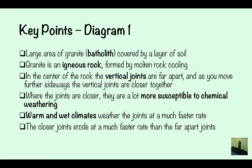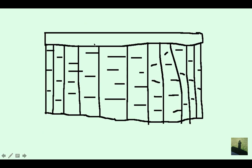In the center of the rock, the vertical joints are far apart. And as you move further sideways, the vertical joints are closer together. So these bits here are the vertical joints. As you can see in the middle, they're a lot further apart. There's a greater distance between them than here where they're close together.